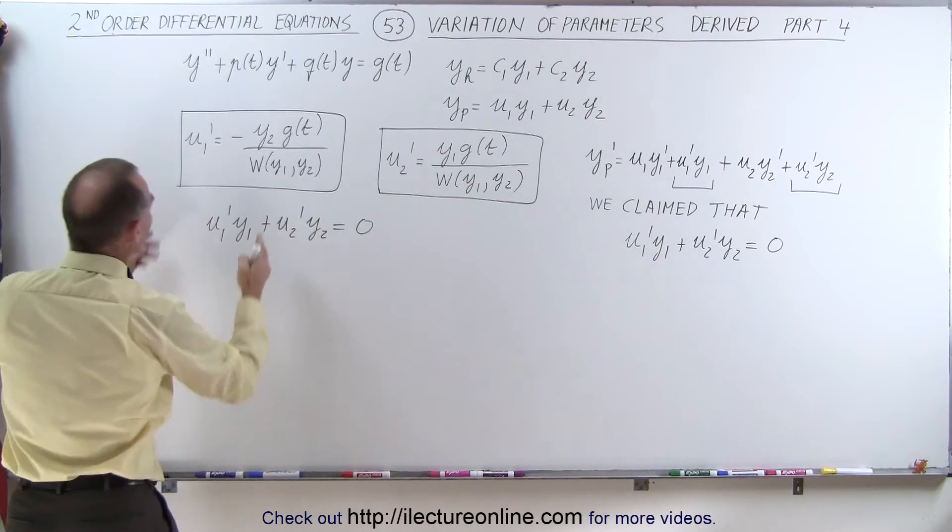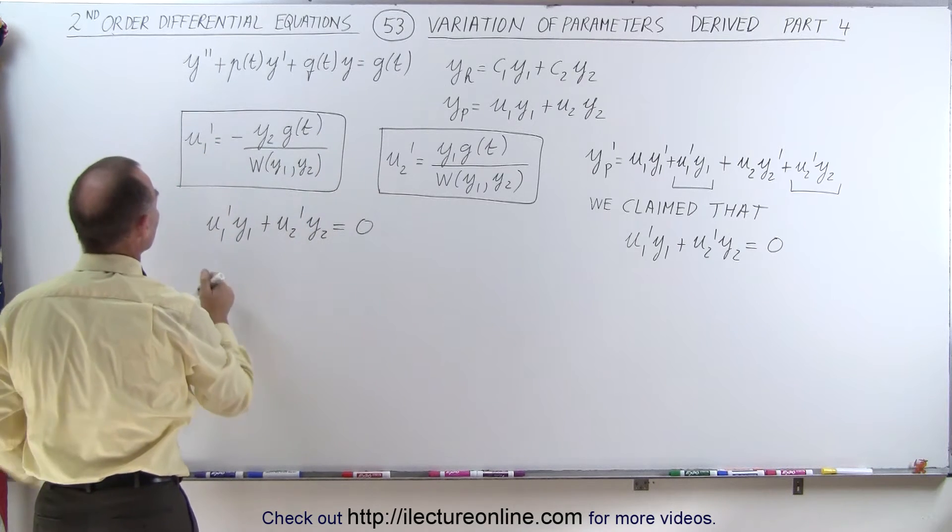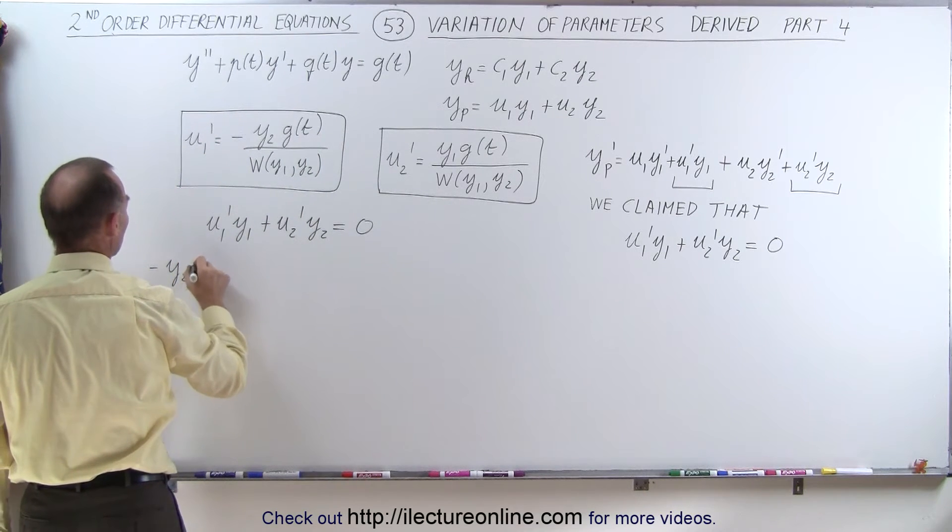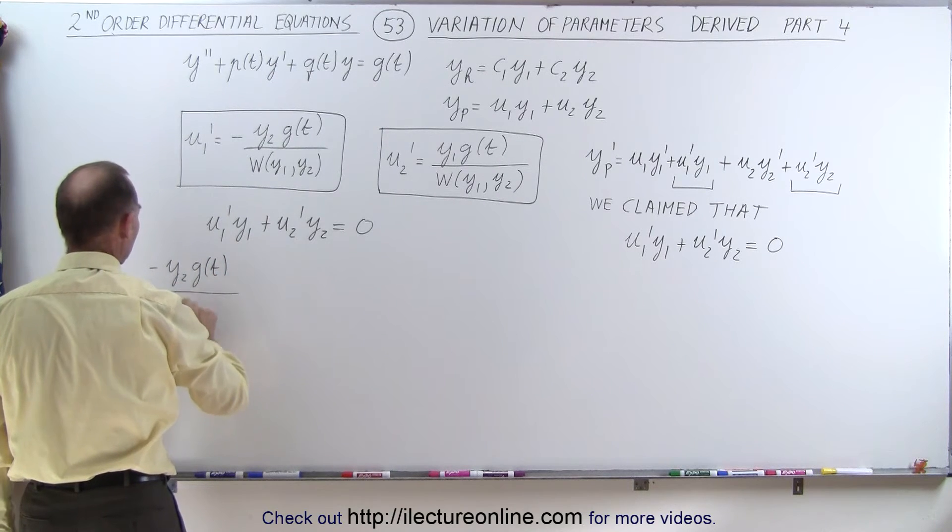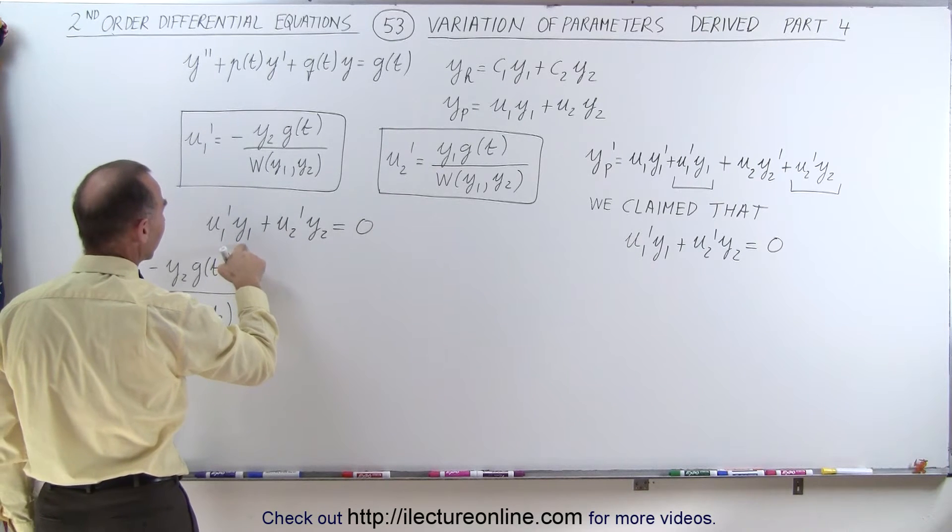So let's plug in u1 prime in here. We end up with minus y2 g of t divided by the Wronskian of y1 and y2, and multiply that times y1.